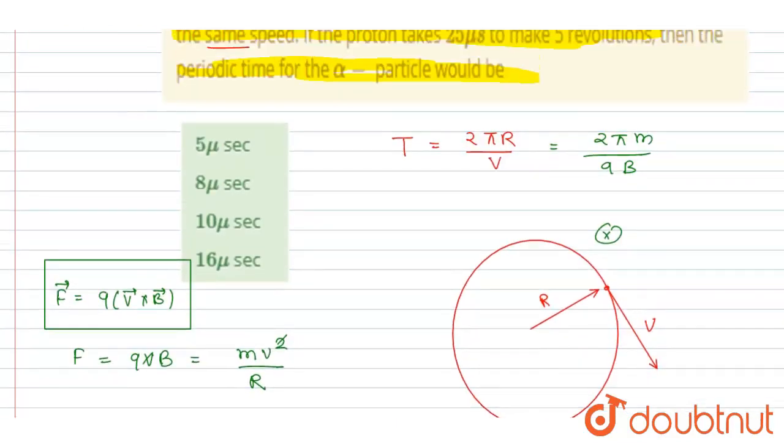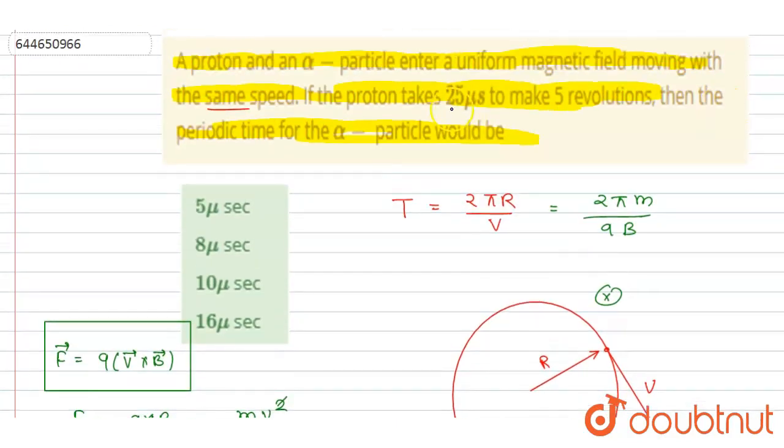Now if you see, the proton takes this much second for 5 revolutions. So I will write the time for 1 revolution: it will be 25 by 5. Because for 5 revolutions it takes 25 microseconds, so in 1 revolution it will take 5 microseconds. So this is the time period for the proton.